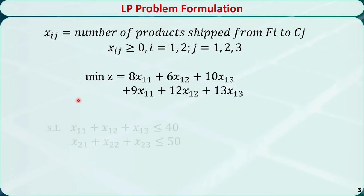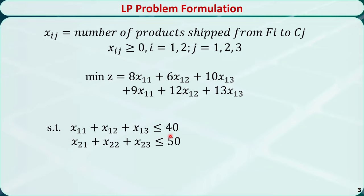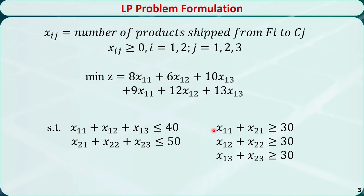As for the constraints, each factory has a limited capacity. The total amount of products sent from factory 1 to all 3 customers should be less than or equal to 40. The total number of products sent from factory 2 to all 3 customers should be less than or equal to 50. Each customer's demand should be met. The total number of products received by customer 1 should be greater than or equal to 30, same for customer 2 and customer 3.